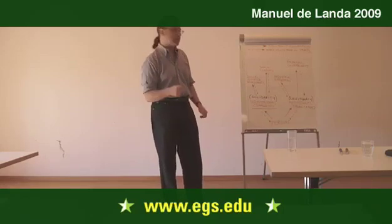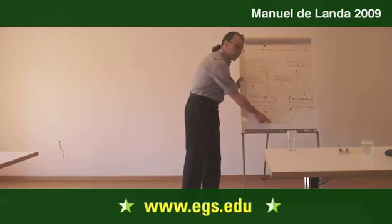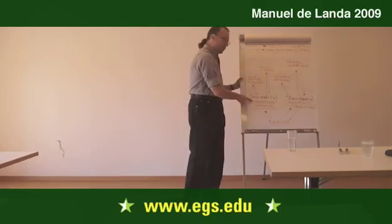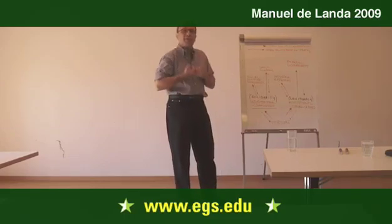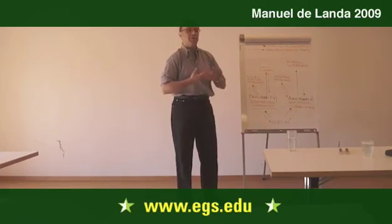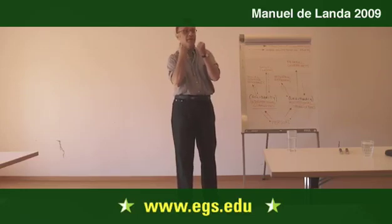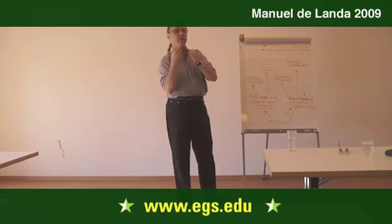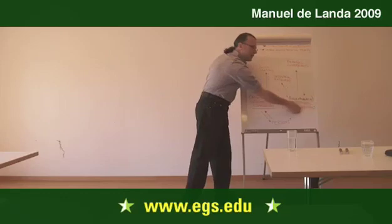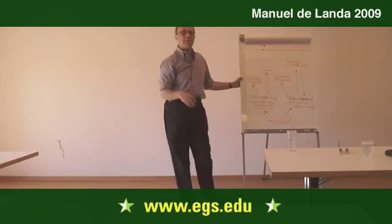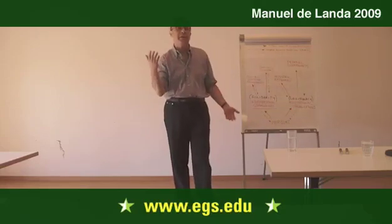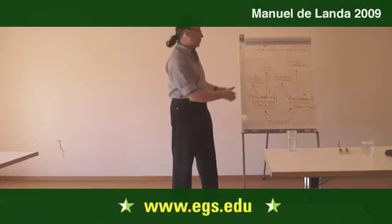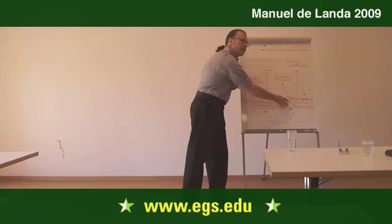Why did Napoleon lose at Waterloo? We're going to have to talk about persons like Napoleon. We're going to have to talk about communities, because his soldiers were citizen soldiers that came from specific communities in France, and they wanted to fight because they had nationalistic feelings about defending the modern country, the modern land. But we also need to talk about organizations, because he was running an army. The French army was an old organization, 300 years old already by the time Napoleon took it over, so it was an entity with its own history.